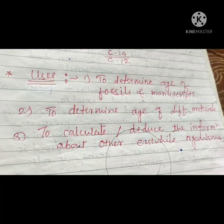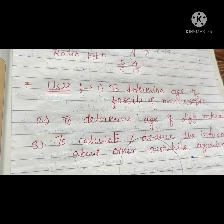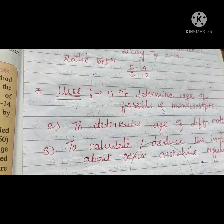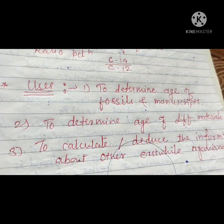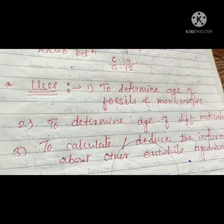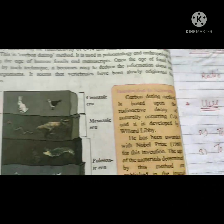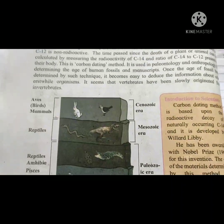This carbon dating method is used to determine the age of fossils and manuscripts. Fossils are the remains of ancient organisms, and manuscripts are ancient handwritten documents.